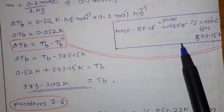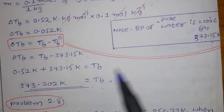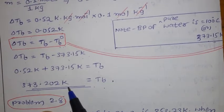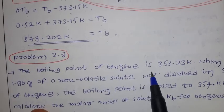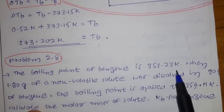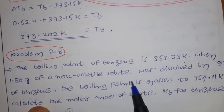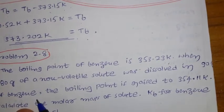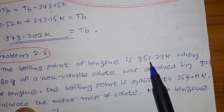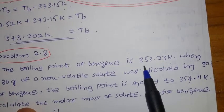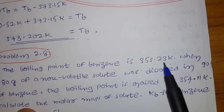When a non-volatile solute is added to a pure solvent, the temperature increases — that is called elevation in boiling point. Now let us see problem 2.8. The boiling point of benzene is 353.23 kelvin. When 1.80 grams of a non-volatile solute is dissolved in 90 grams of benzene, the boiling point is raised to 354.11 kelvin.